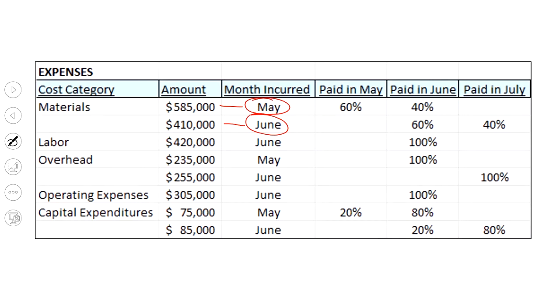They typically pay for materials mostly in the month, 60%, and the other 40% later. And that kind of makes sense. If you figure we're on 30-day payment terms, we usually try to pay a little bit faster than that, that makes sense.